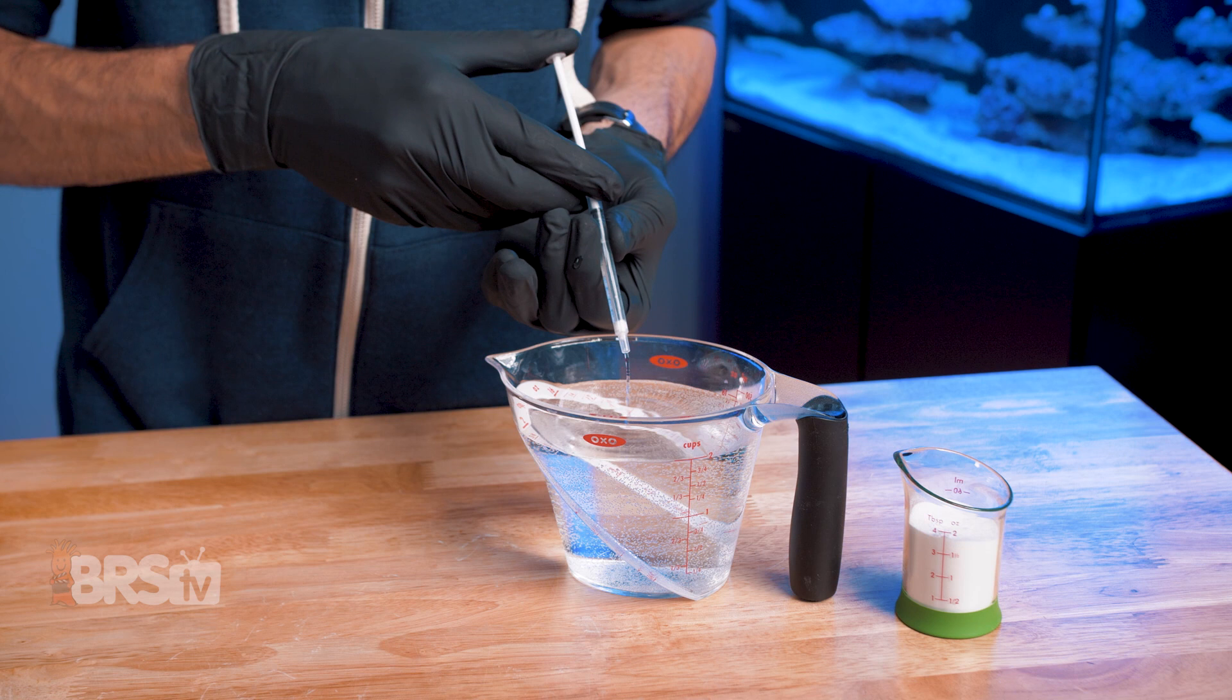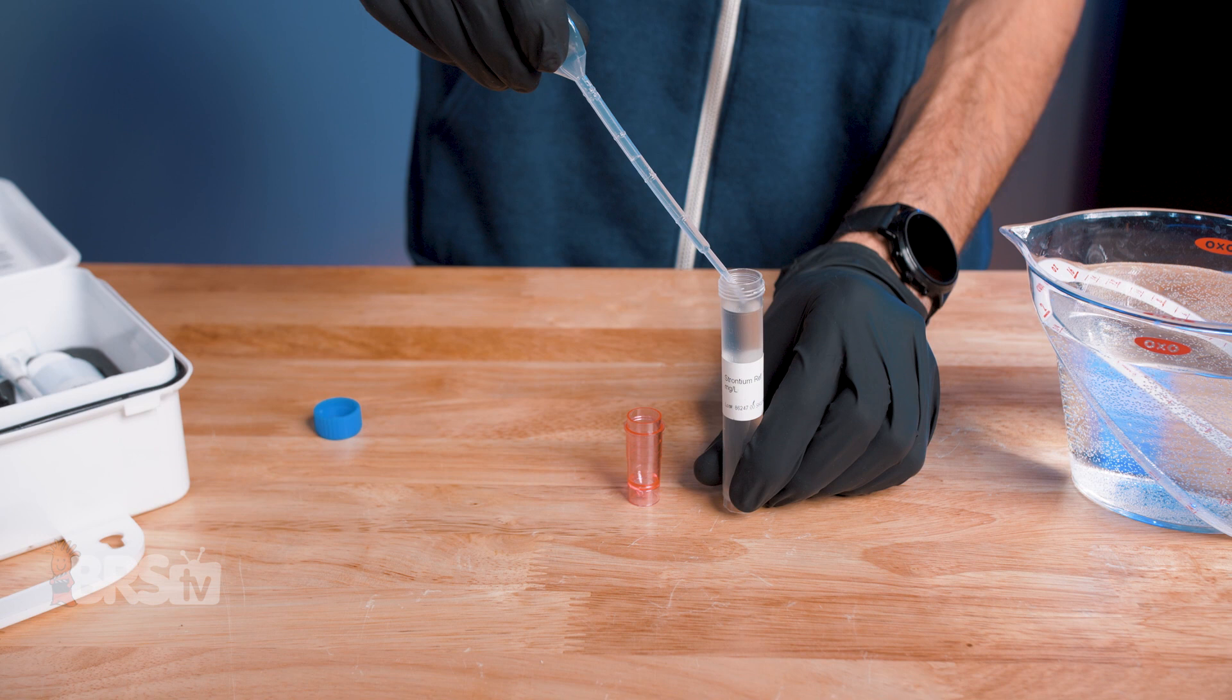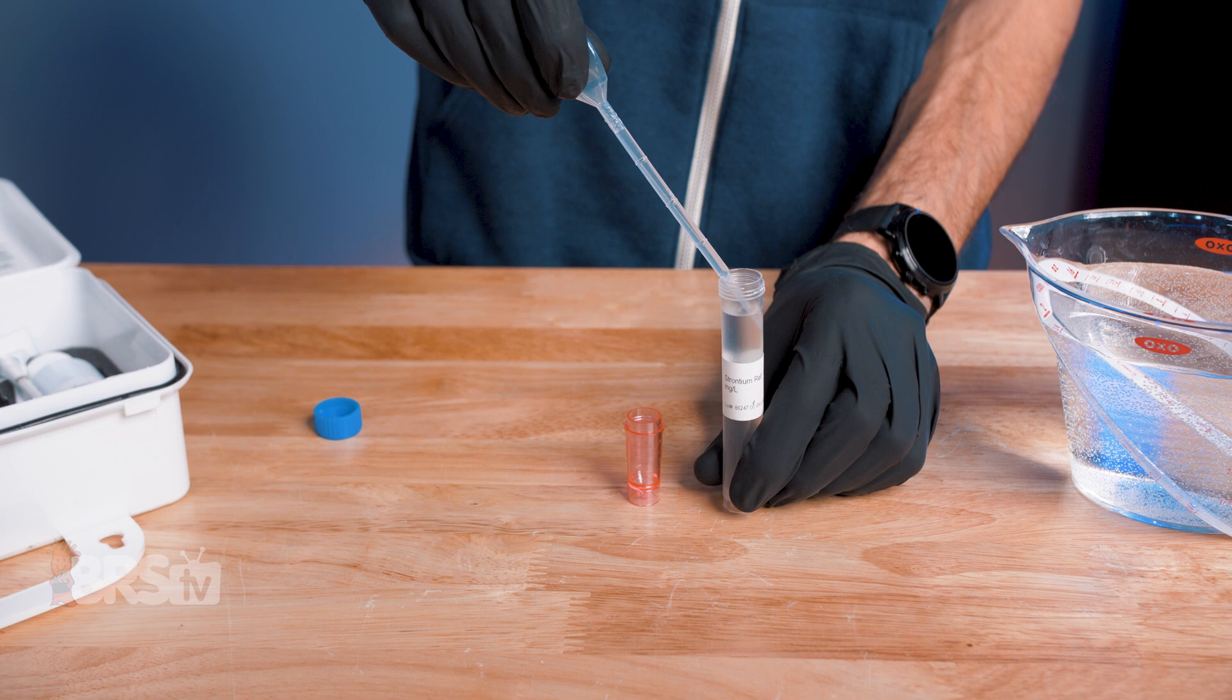Next, use the graduated pipette to measure out one milliliter of sample water from your aquarium, or if you're testing your own proficiency with the test kit, you can use the reference solution as your sample and then add the sample to the vial.